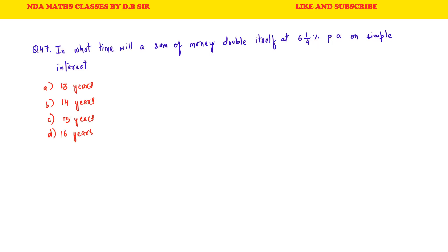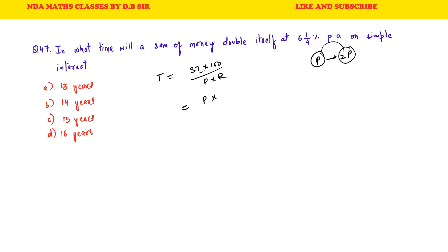Question 47: In what time will a sum of money double itself at 6¼ percent per annum on simple interest? The formula is T = SI × 100 upon P × R. If principal is P and it doubles to 2P, then SI = 2P − P = P. Rate R = 6¼ = 25/4. So T = P × 100 upon P × (25/4) = 100 × 4/25 = 16 years. D is the correct answer.